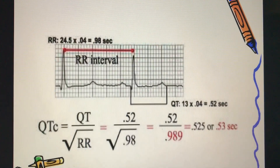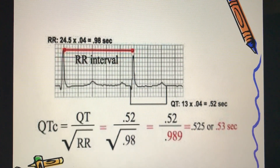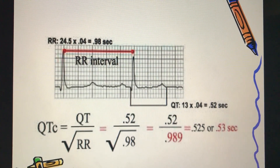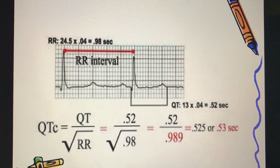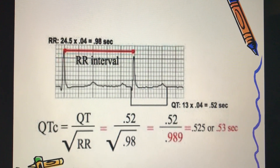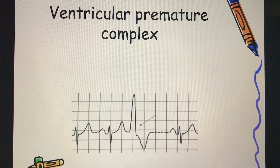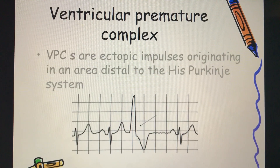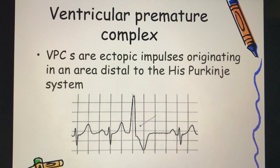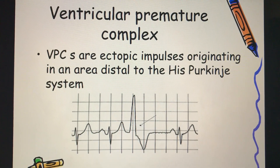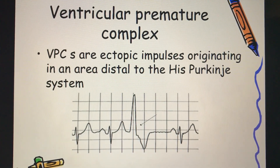We call it a prolonged QT interval when it exceeds 440 milliseconds in men or 460 milliseconds in women. There are multiple correction factors for the QT interval, the most common being Bazett's correction. This is an example of the Bazett's correction formula for the QT interval.